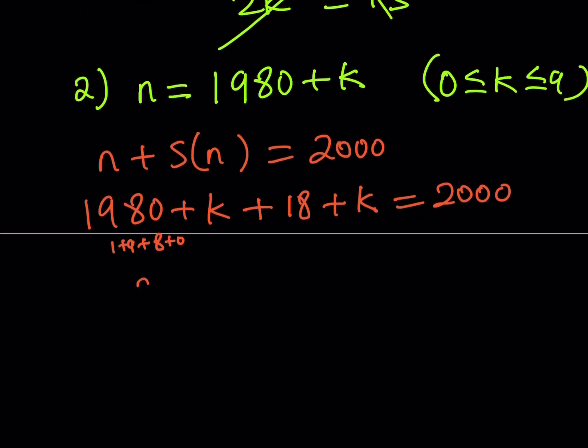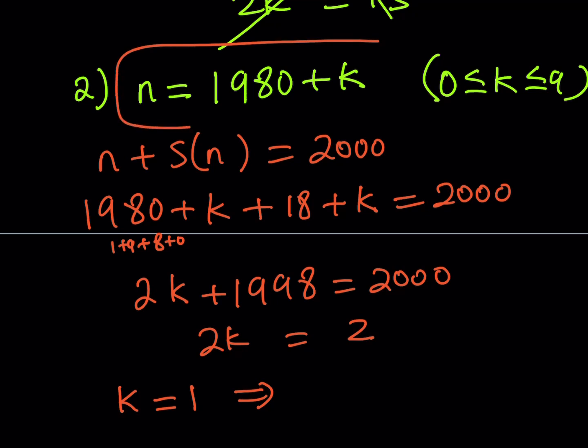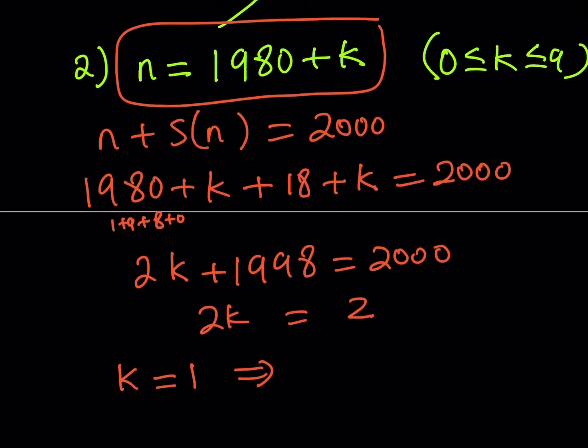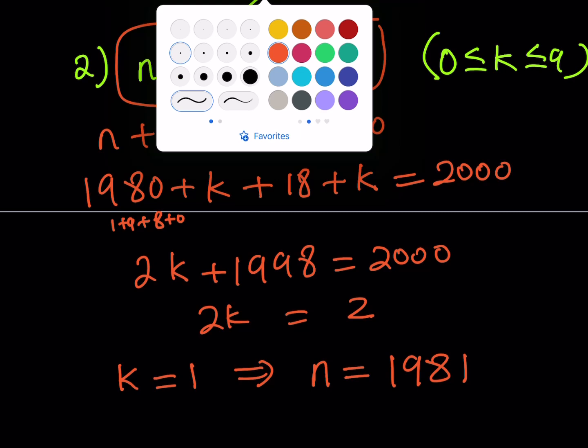Let's see if we get a solution from here. So we should be getting something like 2k plus 1998 is equal to 2000. If you subtract, you're going to get 2k is equal to 2, and k is equal to 1. Now, we're not looking for the values of k. And remember, our assumption was that n is equal to this. So if you go ahead and replace k with 1, then you're going to be getting the n value, which is 1981. And that is the only solution to this equation.